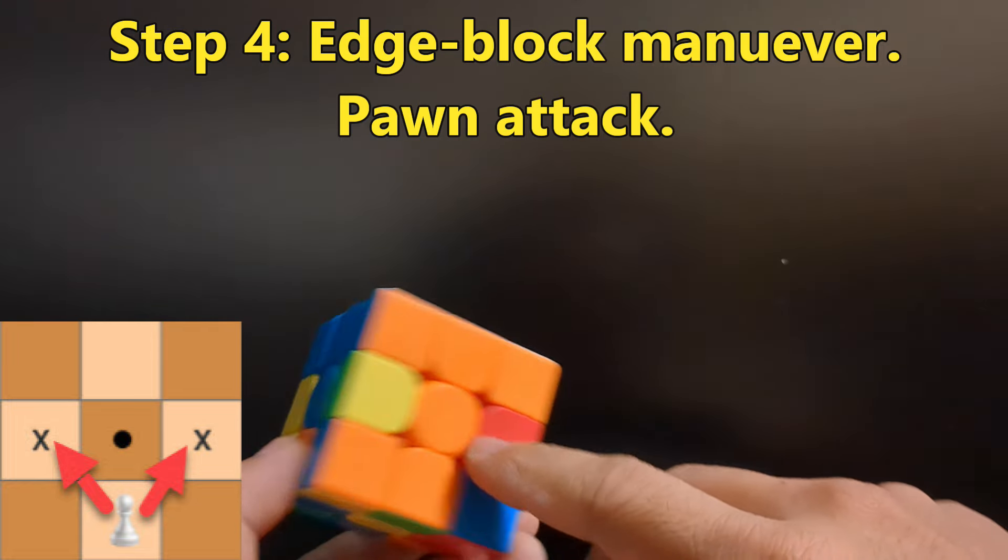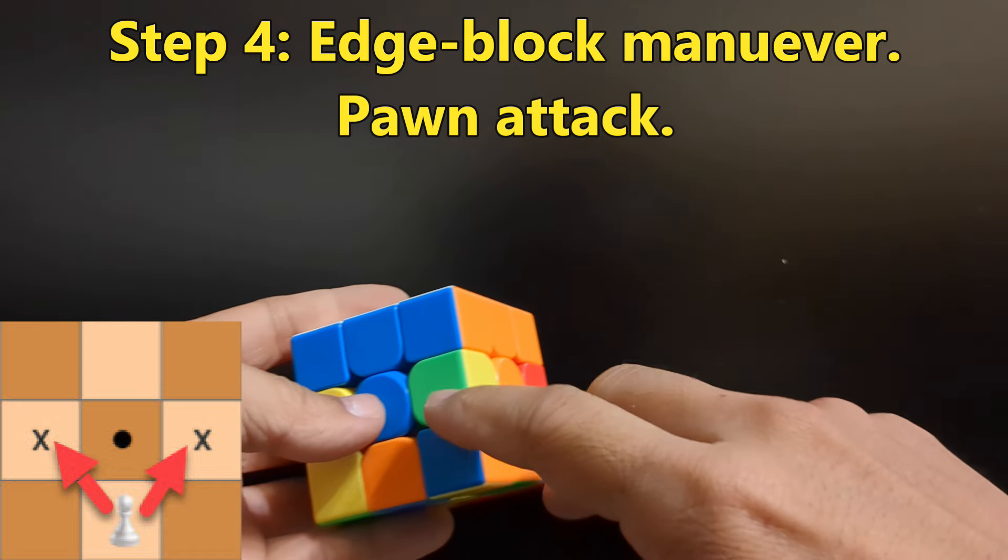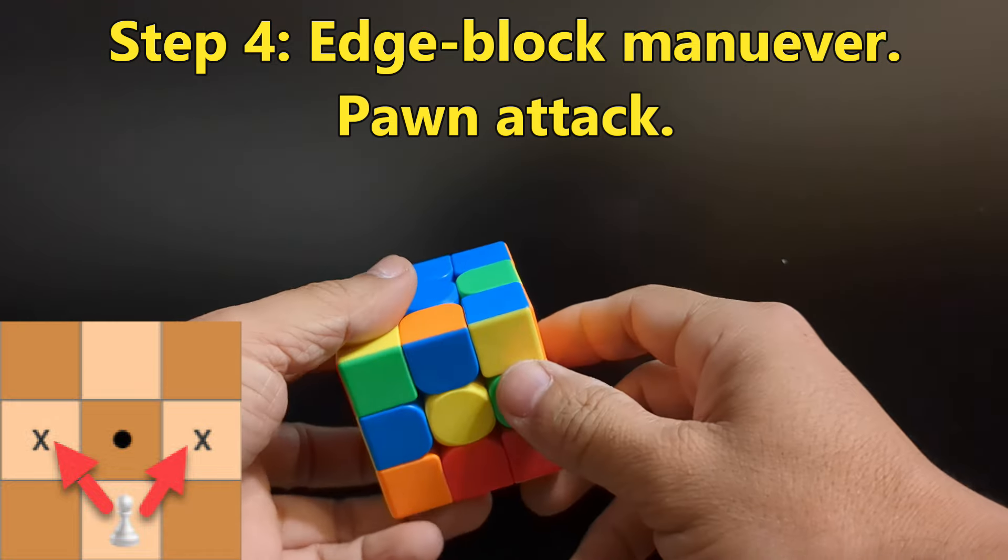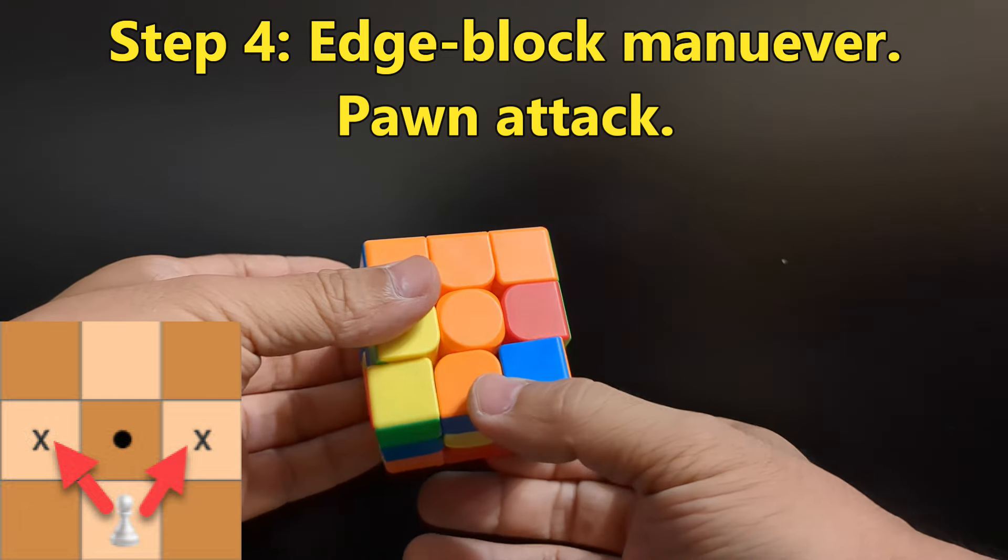For instance, in this case this has to be orange and blue. There's only one orange and blue piece on here, and it's right here. Let's match it to the appropriate color on the side.